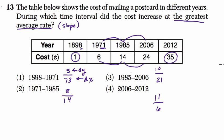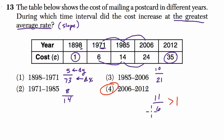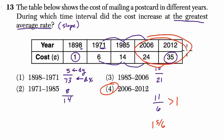Now, without any detailed comparison, I know the answer is interval 4, because that's the only fraction greater than 1. 11 divided by 6 goes in once with a remainder of 5 — so it's 1 and 5 sixths. In every other case, the average rate of change is less than 1. So the biggest change is in the interval between 2006 and 2012. I hope this helps.